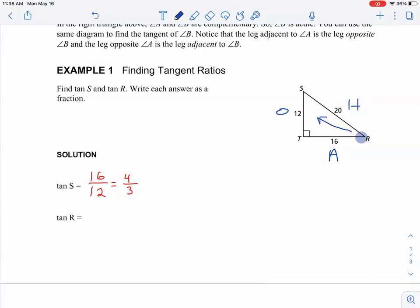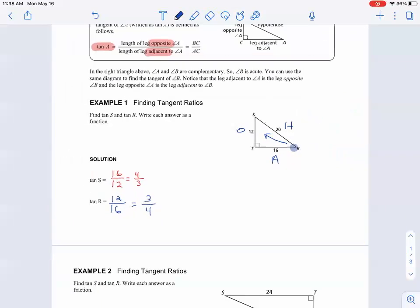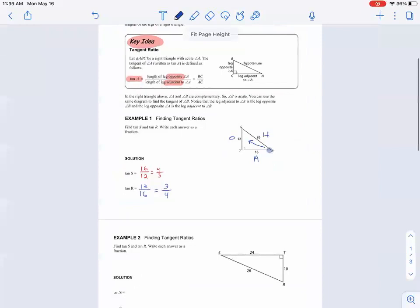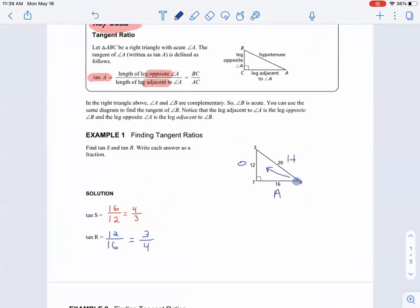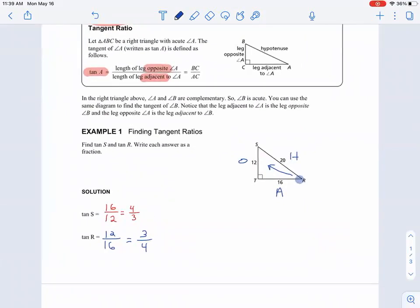And so the tangent of R is 12, because that's opposite, over 16, because that's adjacent. And then that reduces to three over four. All right, any questions yet?